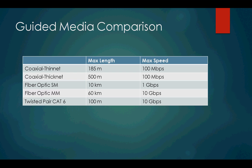To wrap up guided media: coaxial thin net versus thick net differ mainly in distance, but both are inferior compared to fiber optic and even twisted pair. Fiber optic is clearly the future for backbone networks. Twisted pair will still be useful for internal networks because it's cheaper than fiber optic, easier to crimp, and delivers the same speed for internal needs. In internal networking you don't want complex cabling since cables in dusty environments with physical wear need to be replaceable.